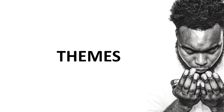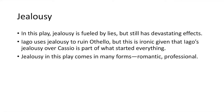When it comes to key themes, the first is the theme of jealousy. This is arguably one of Othello's main weaknesses — he is incredibly jealous and insecure about his relationship with Desdemona. Throughout the play, jealousy is fueled by lies and has devastating effects. Iago uses jealousy to ruin Othello, which is ironic given that Iago's own jealousy over Cassio is part of what started everything. Jealousy comes in many forms: romantic, such as Othello's relationship with Desdemona, and professional, such as Iago's jealousy over Cassio's senior rank.